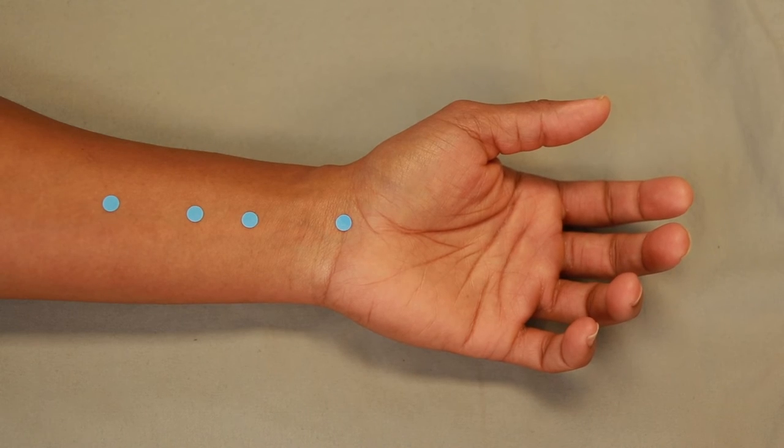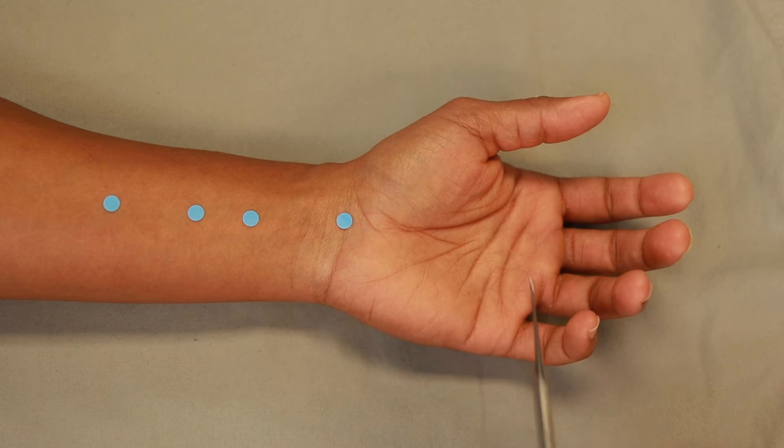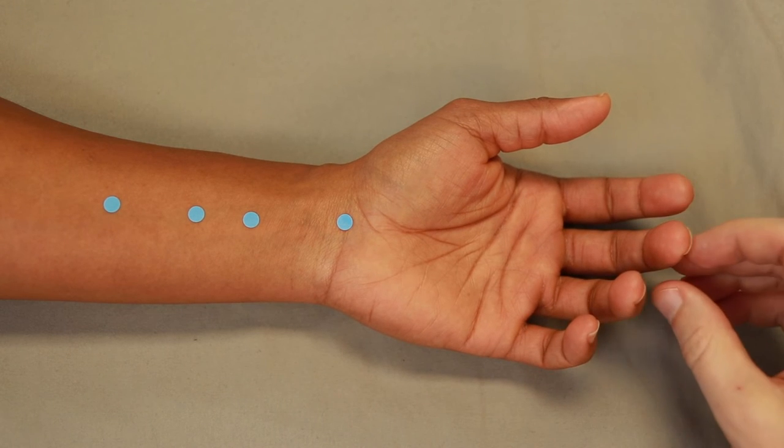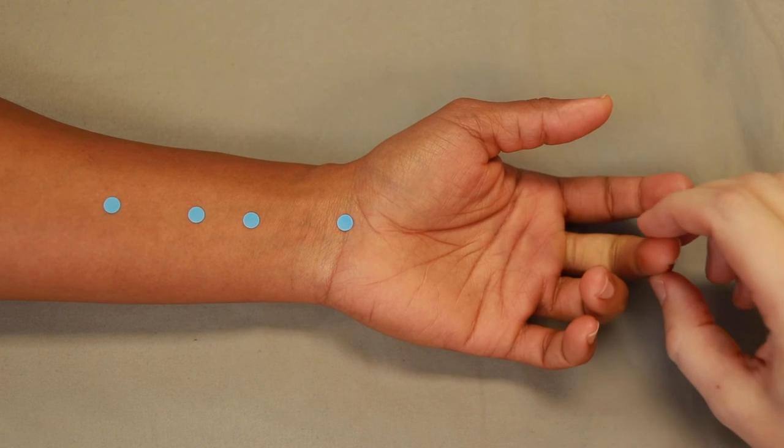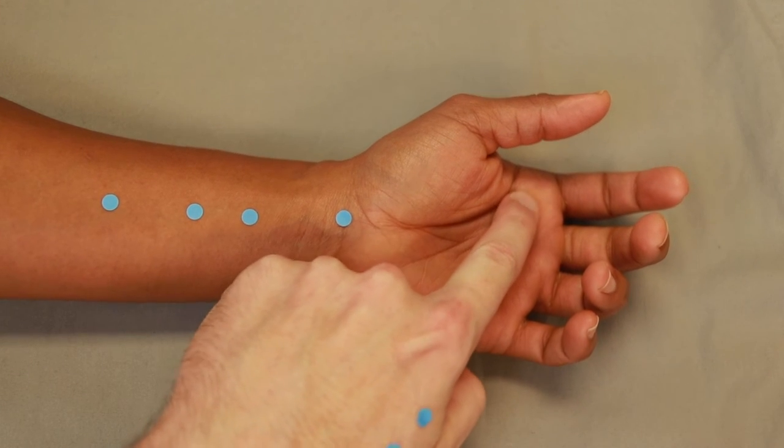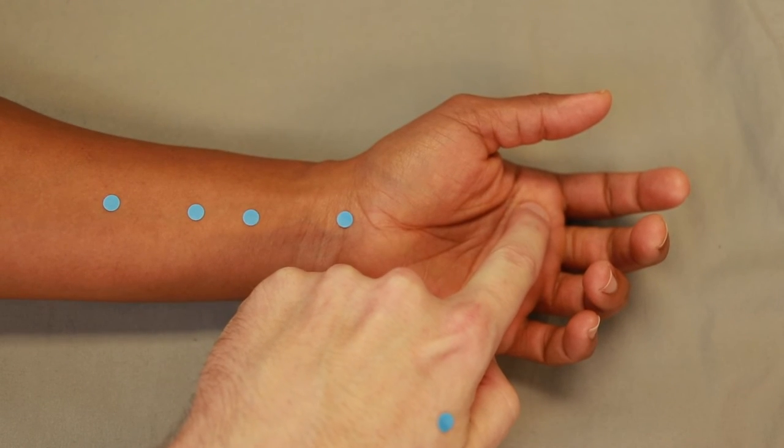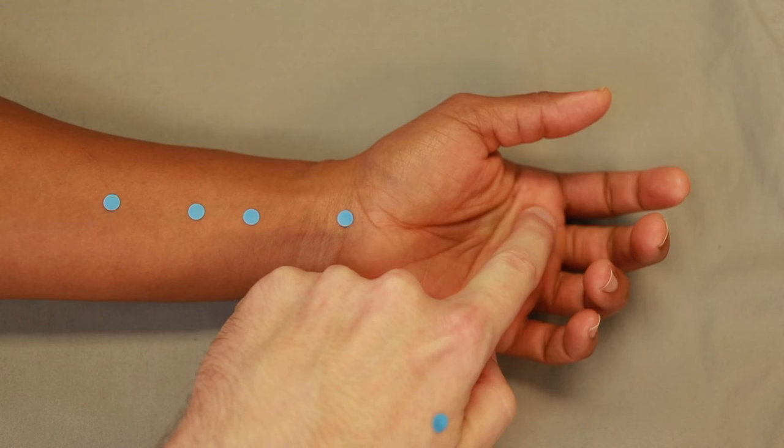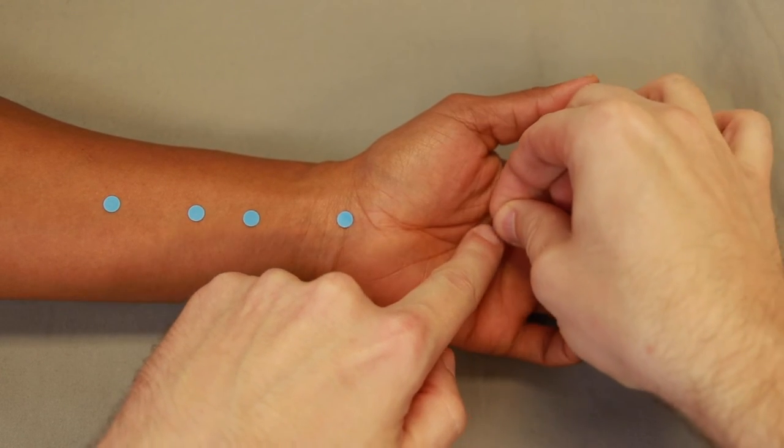After that, we're on the palm of the hand. Pericardium 8 is actually really similar to Heart 8. It's just with pericardium 8 we're between the 2nd and 3rd metacarpals. And this one is where the middle finger lands when a loose fist is made. So again, you can do the loose fist thing or I just palpate for the heads of the metacarpals. Come between the 2nd and 3rd. And then just palpate a little bit proximal to that. You'll fall into a nice depression for pericardium 8.